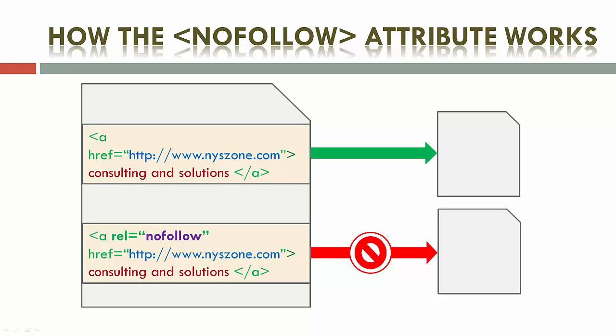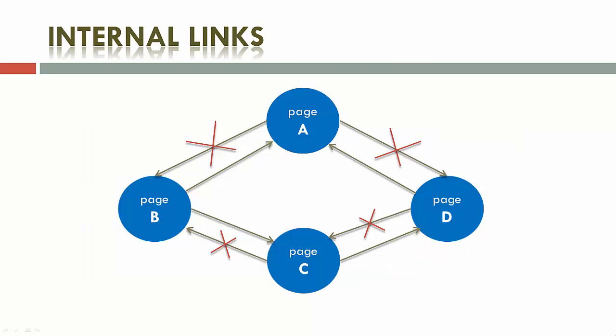Especially, using the nofollow attribute causes the target links to drop from the overall graph of the web. When you are creating internal links, the nofollow attribute helps you to set a crawling path for your pages to Googlebot. That allows you to manage rank credits from page to page within your website and prevent crawling recirculation.